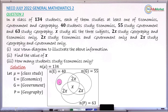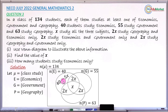Next, we find the expression for those studying economics only, government only, and geography only. For economics only: from the total of 40, subtract 2x, subtract x, and subtract another 2x — so 40 minus 5x. For government only: from 55, subtract 2x, x, and 2x — giving 55 minus 5x. For geography only: from 63, subtract 2x, x, and 2x — giving 63 minus 5x. The Venn diagram is now complete.